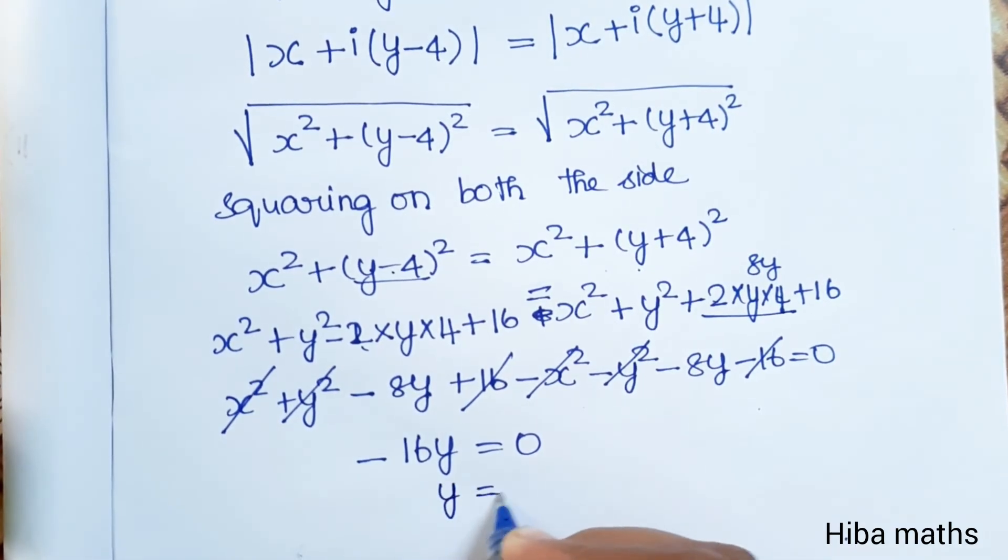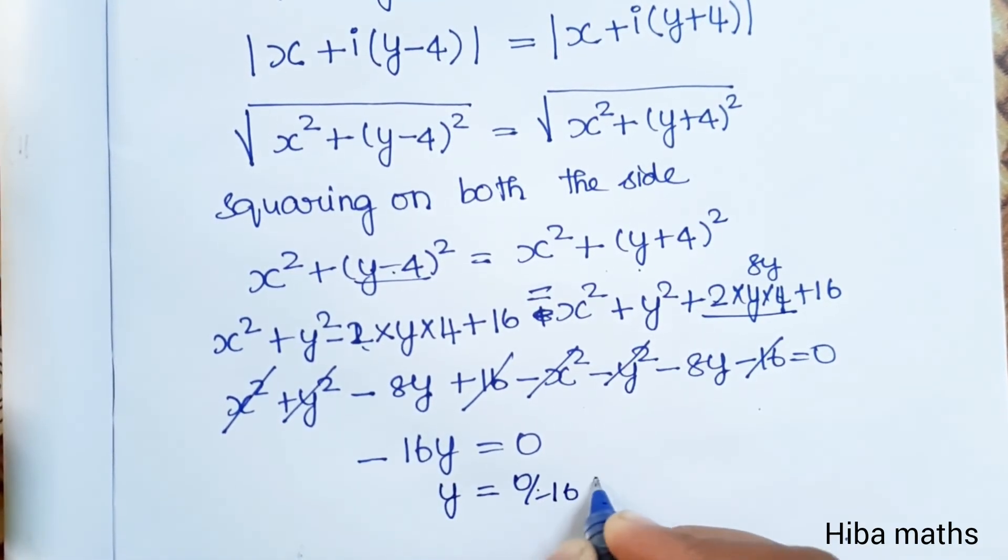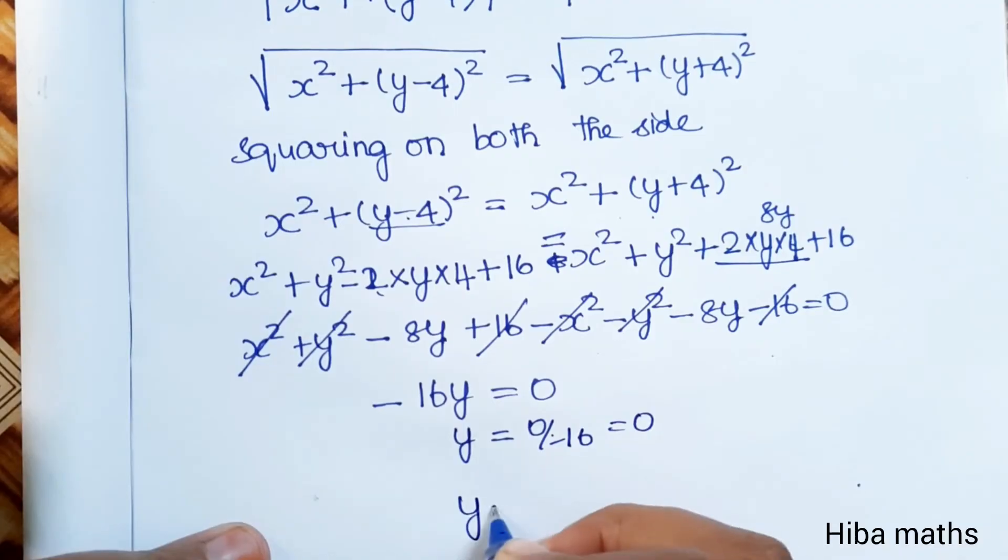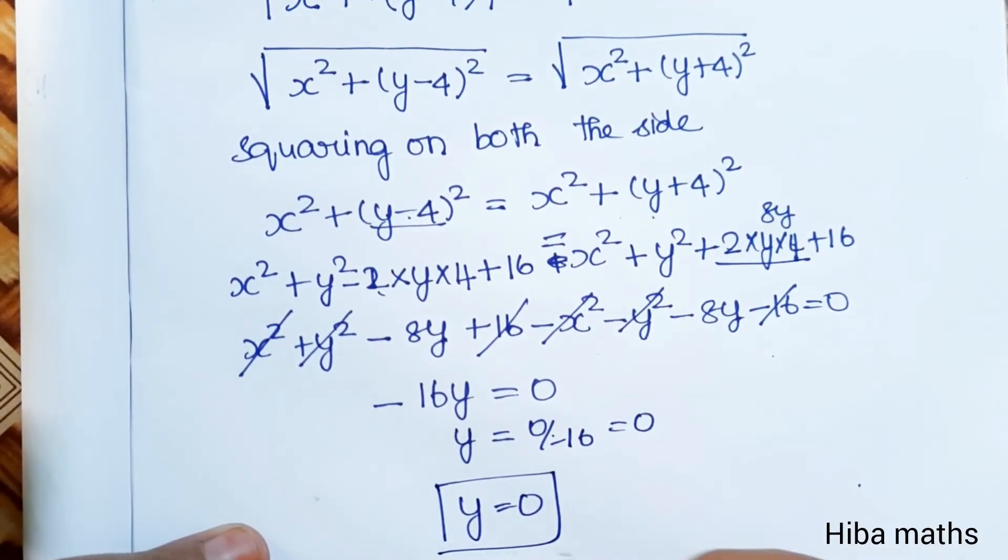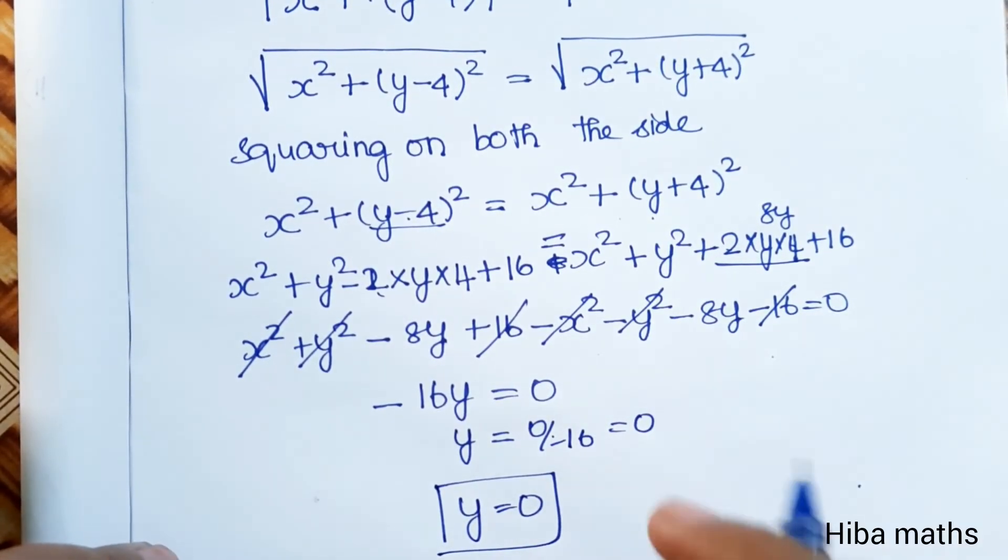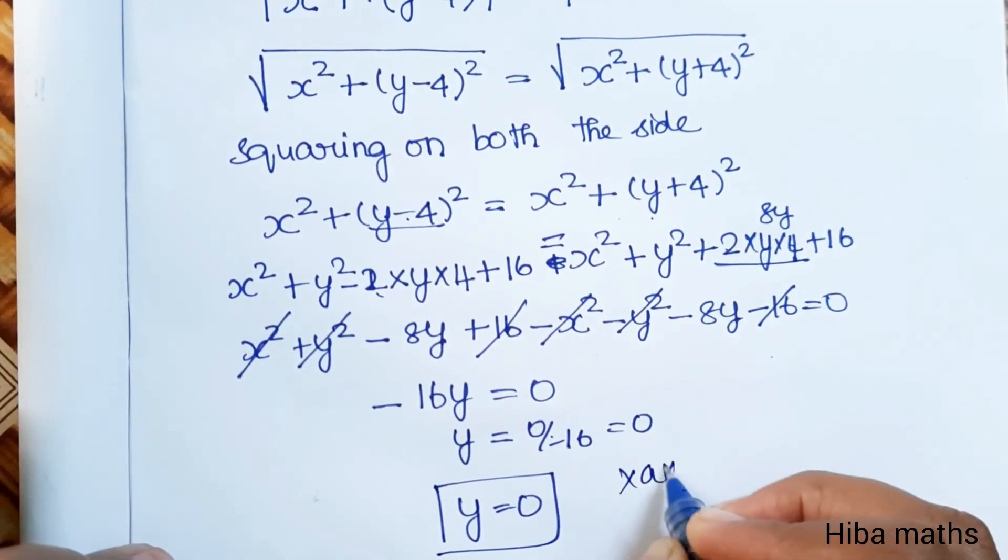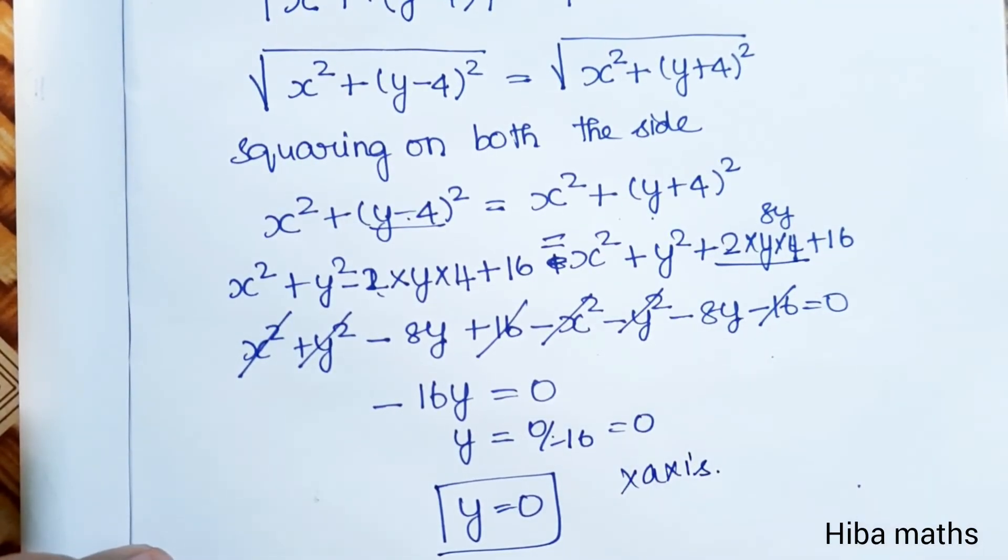At the line, y equals 0 divided by minus 16 equals 0. Therefore, y equals 0. y equals 0, this is the x-axis and it is the real axis.